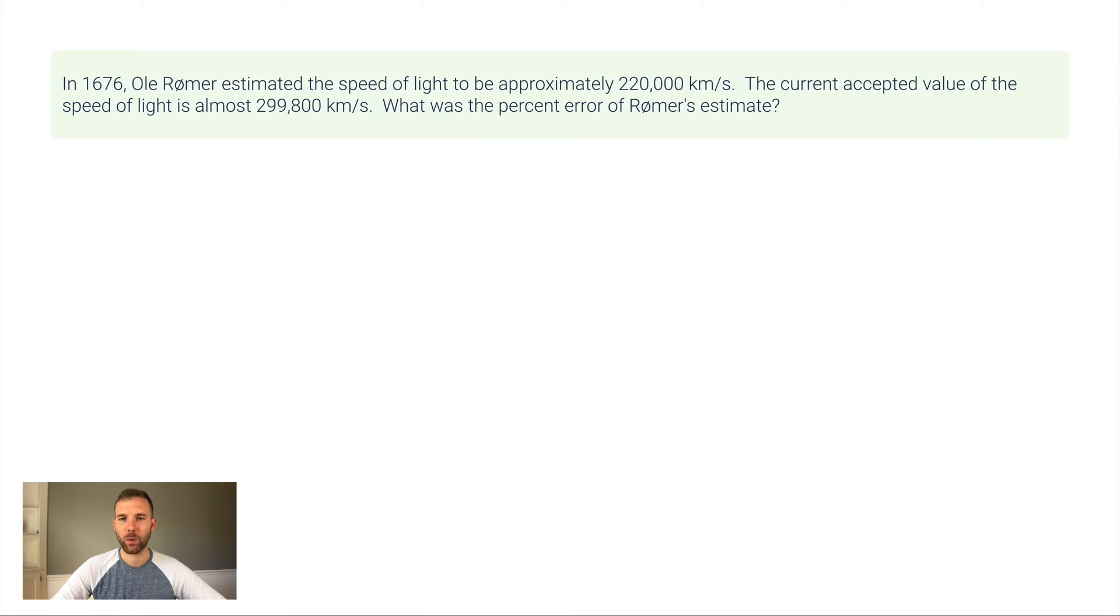In 1676, Ole Rømer estimated the speed of light to be approximately 220,000 kilometers per second. The current accepted value of the speed of light is almost 299,800 kilometers per second. What was the percent error of Rømer's estimate?